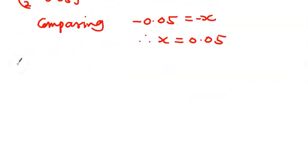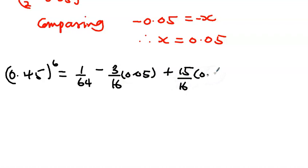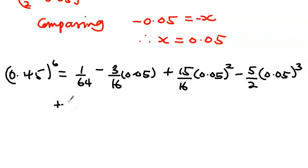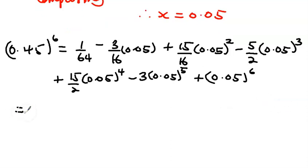We substitute x = 0.05 into the expansion. So (0.45)^6 equals 1/64 minus (3/16)(0.05) plus (15/16)(0.05)^2 minus (5/2)(0.05)^3 plus (15/4)(0.05)^4 minus 3(0.05)^5 plus (0.05)^6.